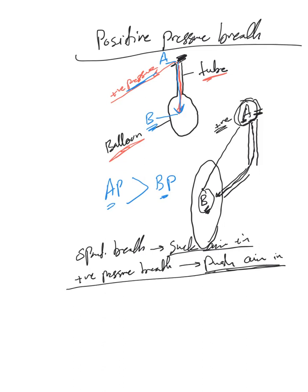The device applied here could be a mask like BiPAP or CPAP, or a machine like a ventilator that creates this positive pressure. That's the difference between positive pressure breath and spontaneous breath.